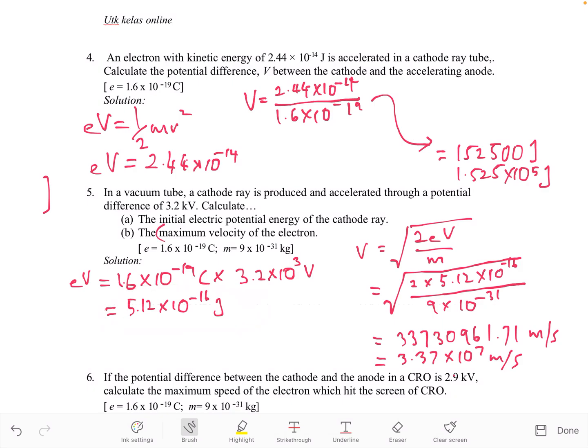In the next question, what is the maximum velocity of the electron? Maximum velocity, so you can use this formula and you make V as a subject. When you have this formula, you can substitute everything in the formula, but eV you have already calculated this value. M is given in the question, so use your calculator, then you get this value.